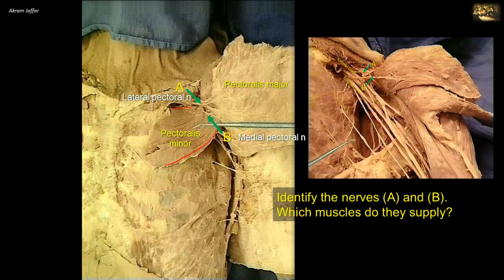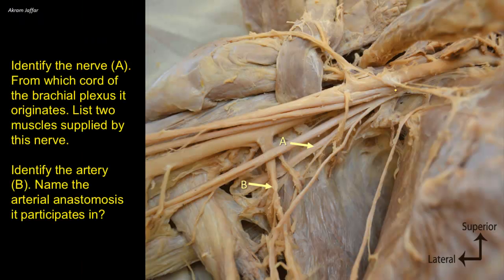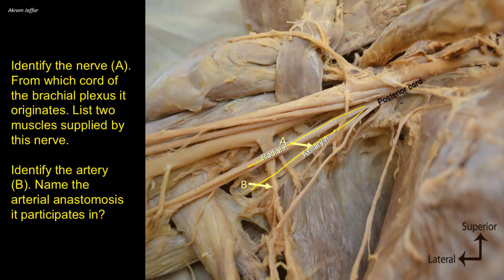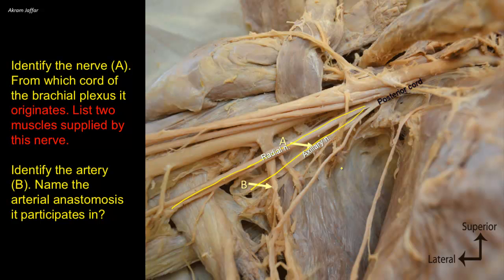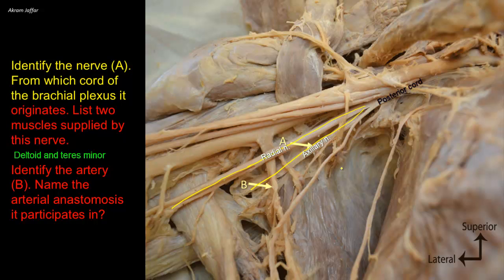Identify nerve A, from which cord of the brachial plexus it originates, and list two muscles supplied by it. Nerve A is a terminal branch of the posterior cord of the brachial plexus — it is the axillary nerve. The posterior cord has two large terminal branches: the radial nerve and the axillary nerve. The axillary nerve leaves the axilla by passing through a quadrangular space in its posterior wall, while the radial nerve continues into the arm. The two muscles supplied by the axillary nerve are the deltoid and teres minor muscles.